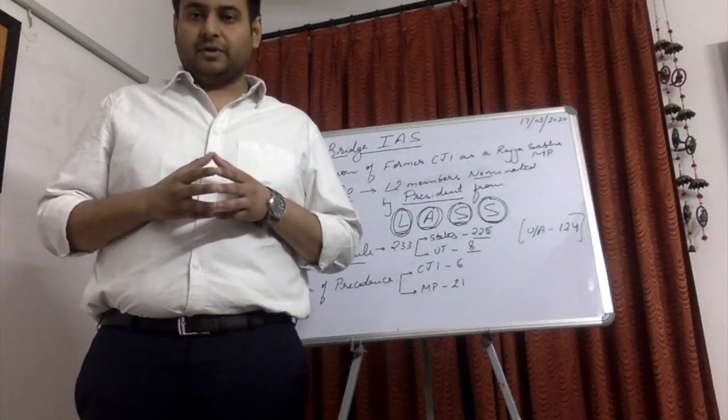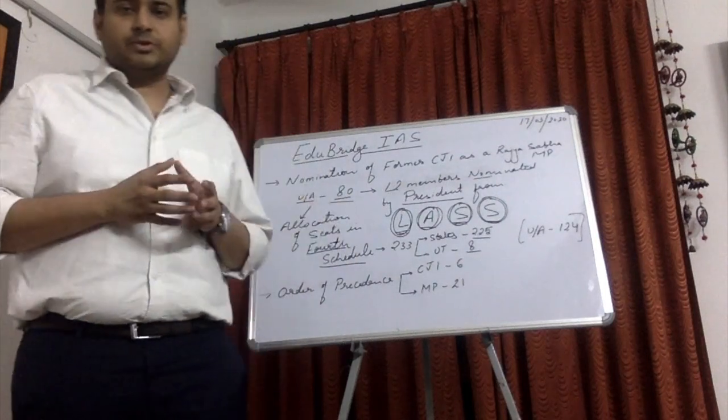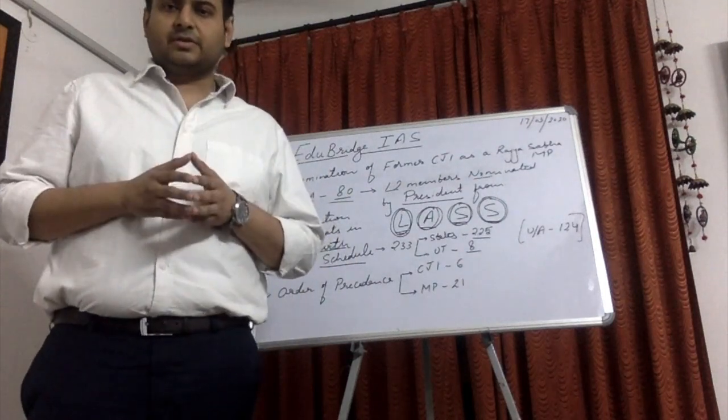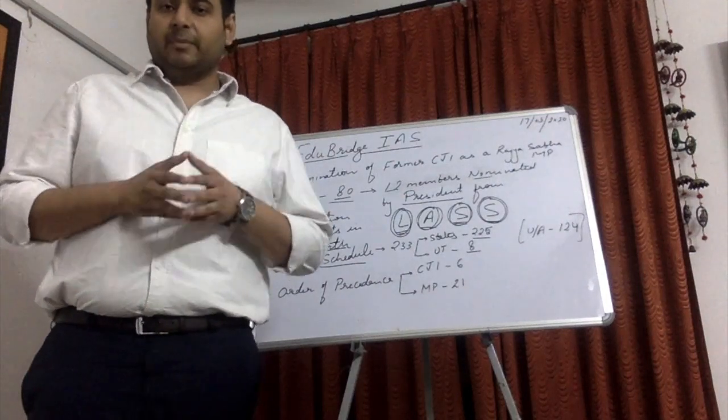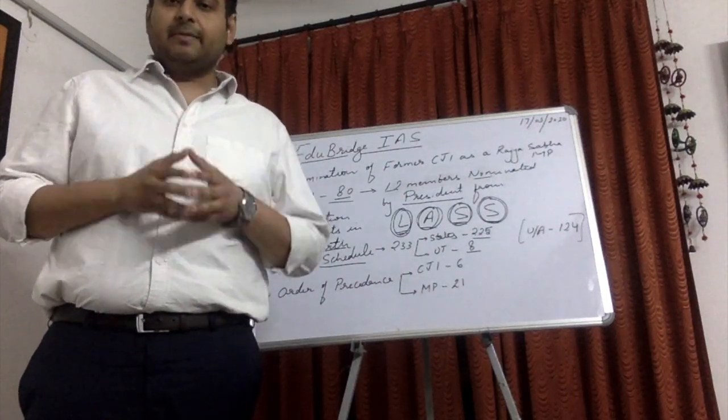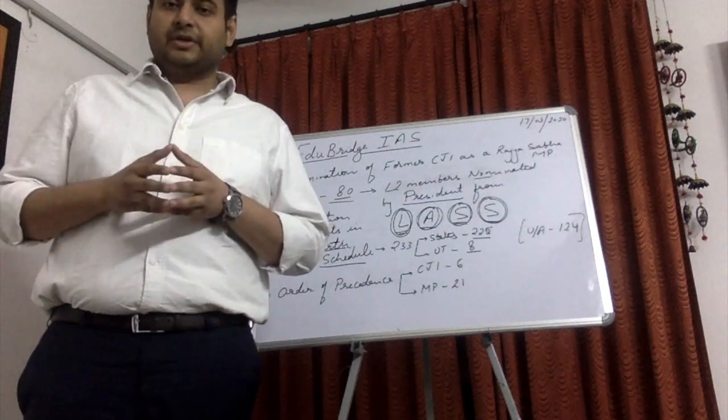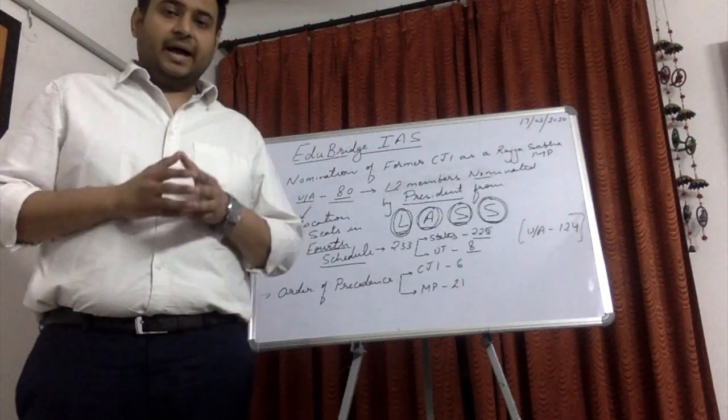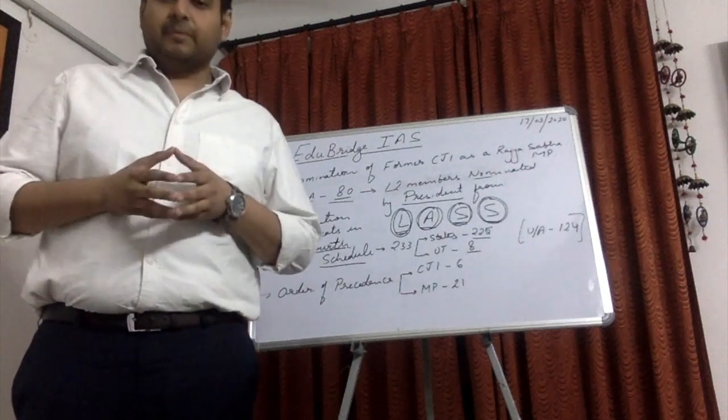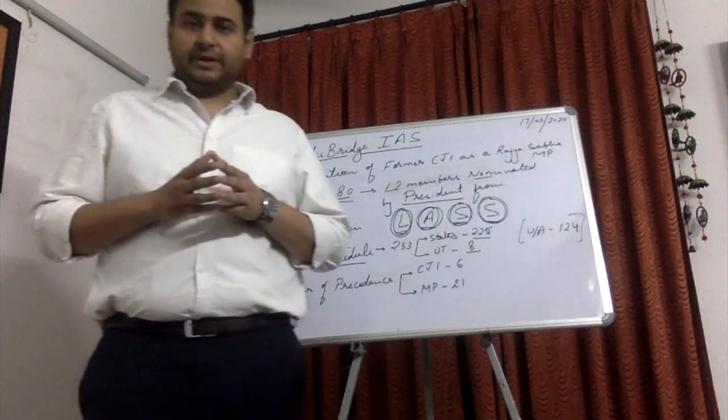Article 80 of the Constitution of India provides for the composition of Rajya Sabha which consists of 233 elected members and 12 nominated members. The elected members' composition is provided in the fourth schedule of the Indian Constitution and there will be 12 nominated members who will be nominated by the President of India.